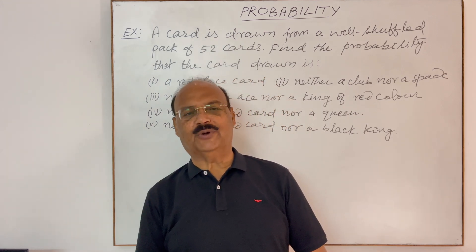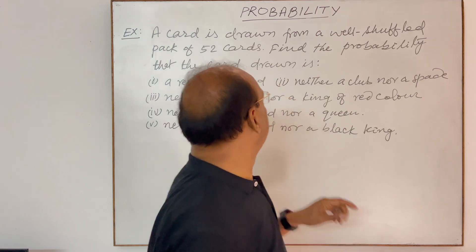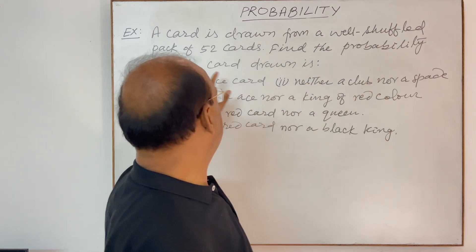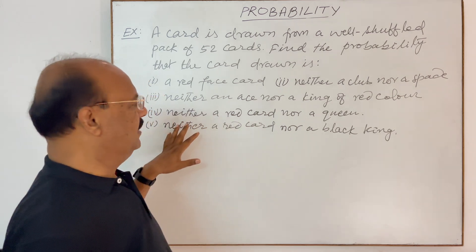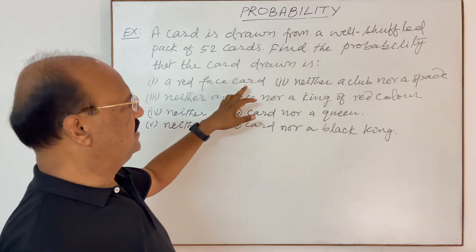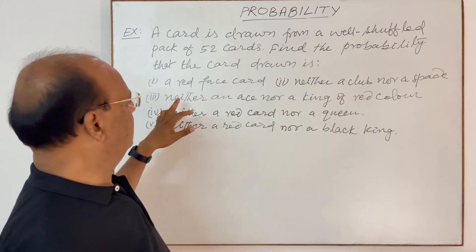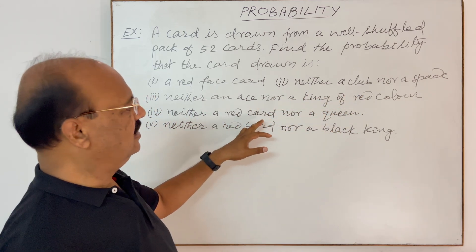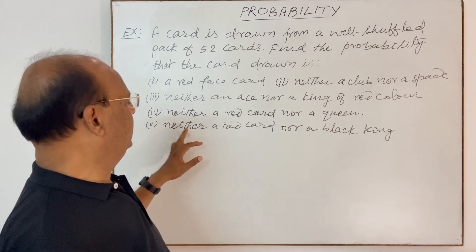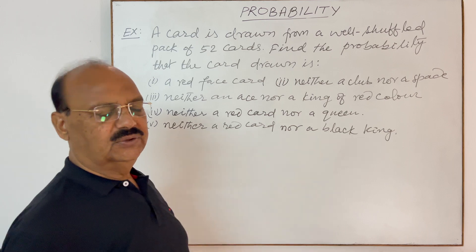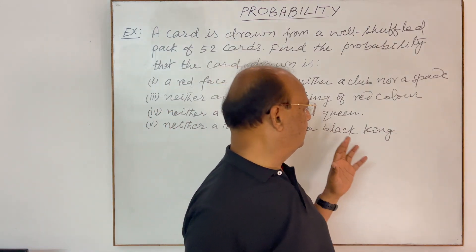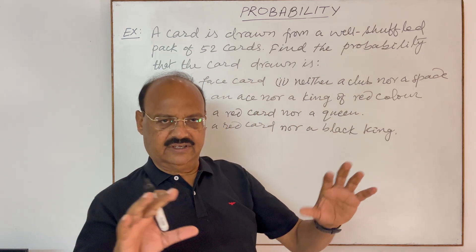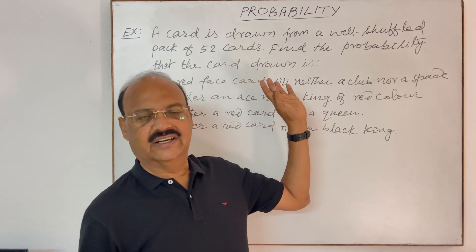Welcome students. Let us see a very important question from the topic probability. A card is drawn from a well-shuffled pack of 52 cards. Find the probability that the card drawn is: first, a red face card; second, neither a club nor a spade; third, neither an ace nor a king of red color; fourth, neither a red card nor a queen; and fifth, neither a red card nor a black king. Maximum different types of questions are included here, so let us focus on the solution.